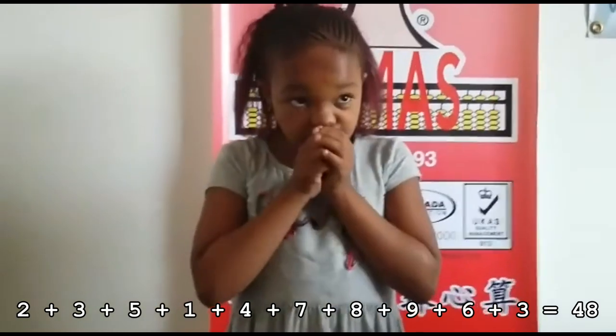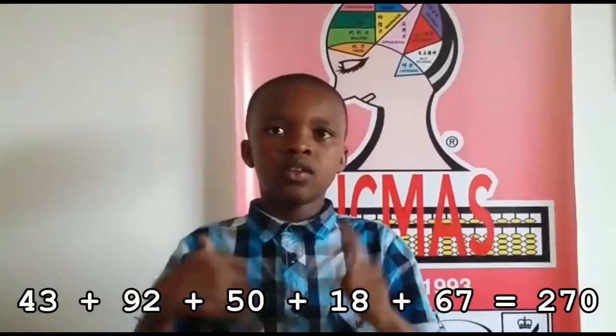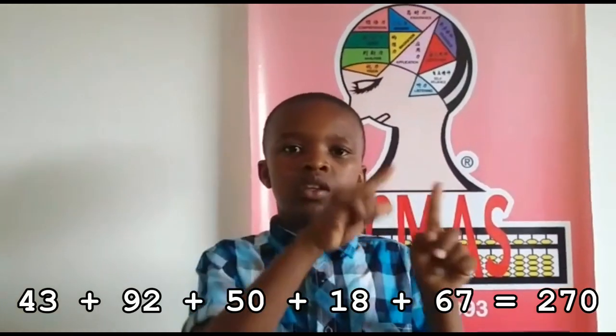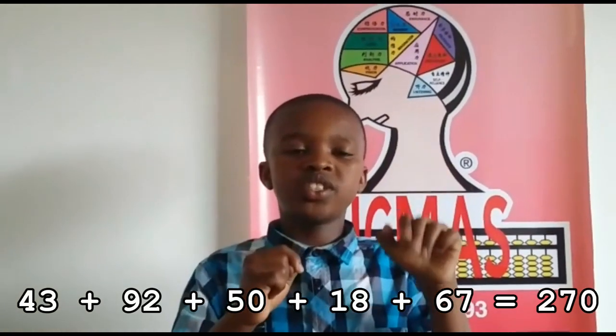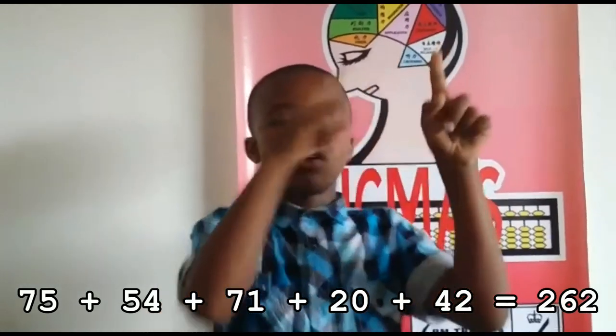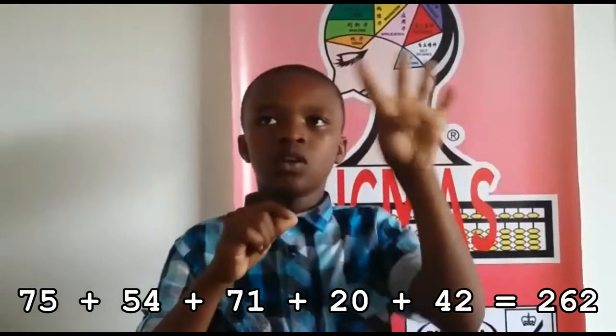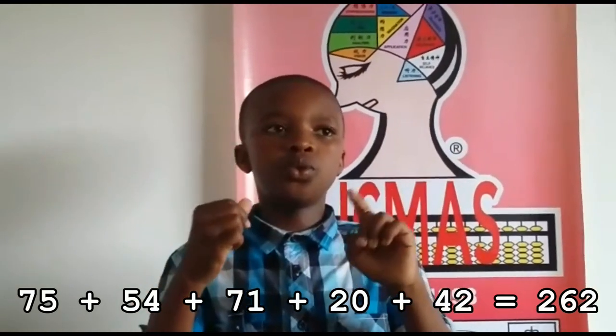43 plus 92, 50, 18, 67. That is ready. 75 plus 54, 71, 20, 42. That is 262. Ready.